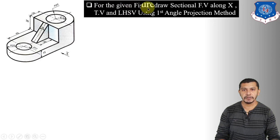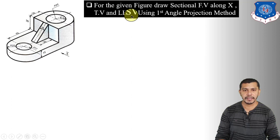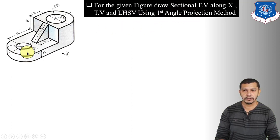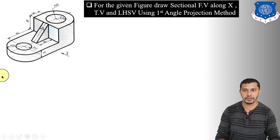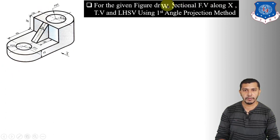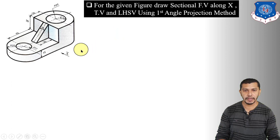For the given figure, draw the sectional front view along the X direction, the top view, and the left-hand side view using the first angle projection method. For this figure, we have to draw the sectional front view along the X direction, the corresponding left-hand side view, and the top view. But before thinking about the sectional front view, let us first draw the front view, top view, and left-hand side view of the object.